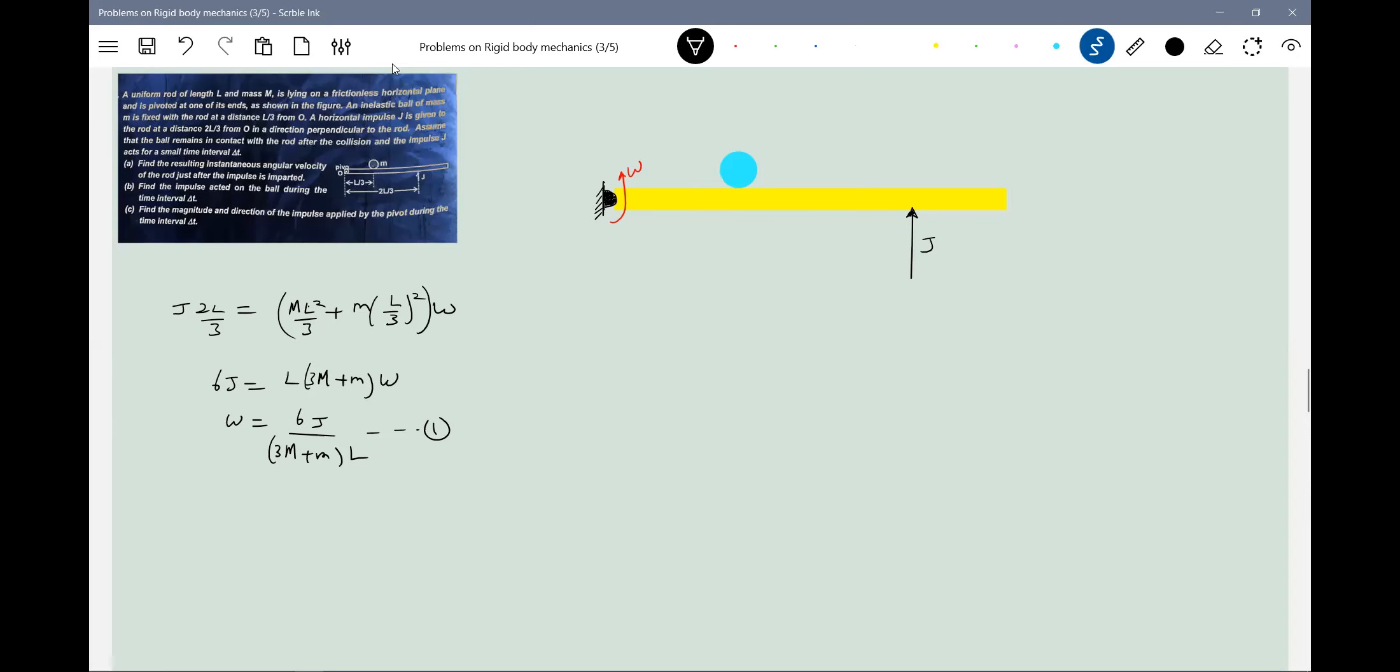The first part is to find the impulse acted on the ball during the time interval Delta T. How to bring this? So what are the state of the ball earlier? They were at rest. It suddenly started moving and it acquired angular momentum. So I'll go for the angular impulse, angular impulse. J theta if you remember.